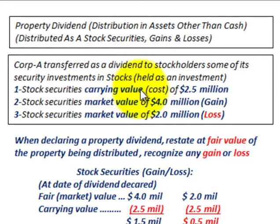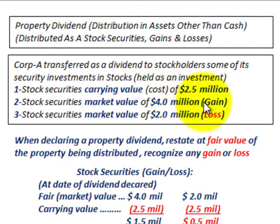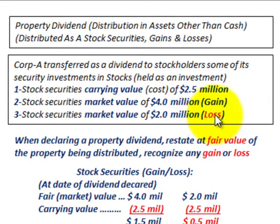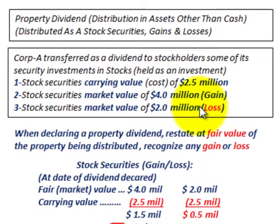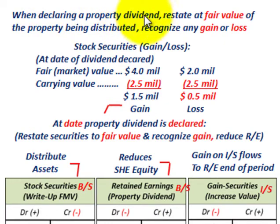For our stock securities, the carrying value or cost is $2.5 million sitting as an asset on the balance sheet. In Case 1, the stock securities have a market value of $4 million, which will produce a gain on distribution. In Case 2, the market value is $2 million, producing a loss. When declaring a property dividend, you must restate the property to its fair value and recognize any gain or loss at that fair value.